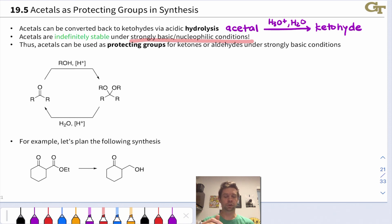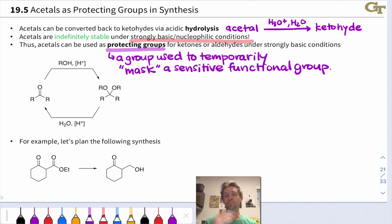We can use acetals as what are called protecting groups. A protecting group is a group that we use to temporarily mask or hide a functional group that would react under reaction conditions where we don't want it to react. Sensitive functional groups can be temporarily transformed into something unreactive and then transformed back to their original structure at a later stage.